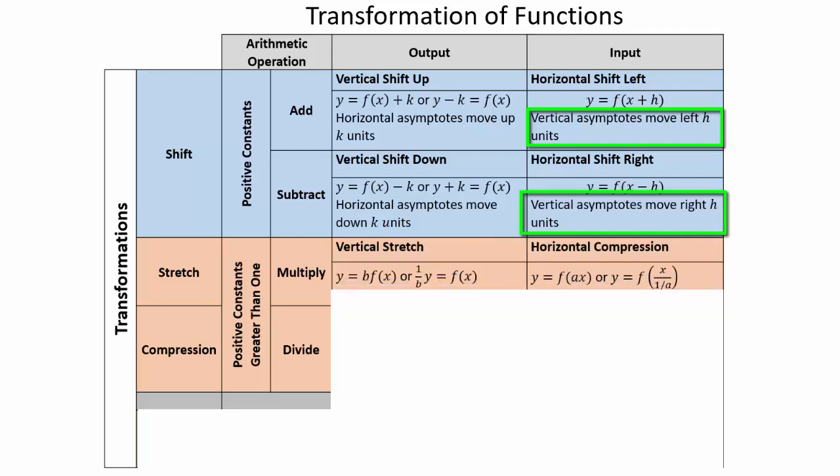Vertical stretch or compression occurs when you multiply or divide the output by a constant. Vertical stretch is when you multiply the output by a constant bigger than one — you can also think of it as y divided by b, or one over b times y equals f of x. Horizontal compression occurs when you have y equals f of ax where a is bigger than one. Horizontal stretch occurs when you have x divided by a, or one-over-a times x.